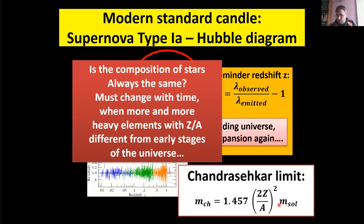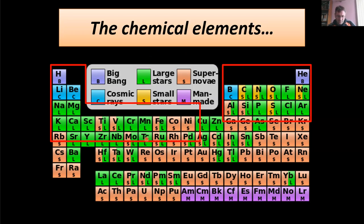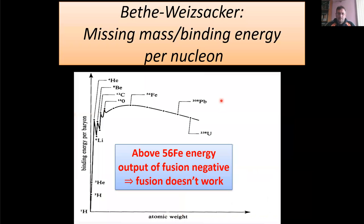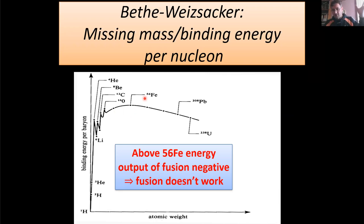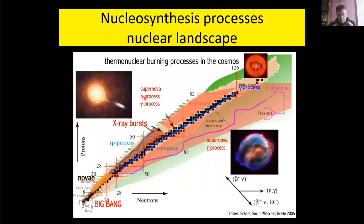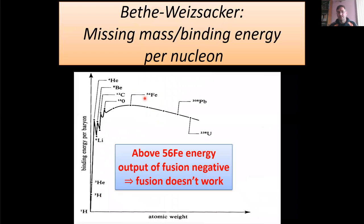To summarize: light stars burn up to iron, maybe nickel. Above iron, we need a different type of reaction — fusion doesn't work. Even in these explosions, what we have is fusion driving smaller nuclei to become bigger ones, driven by the collapse. But the reactions needed to go beyond iron — that's for the next video. This video has been about 50 minutes, which is long enough.